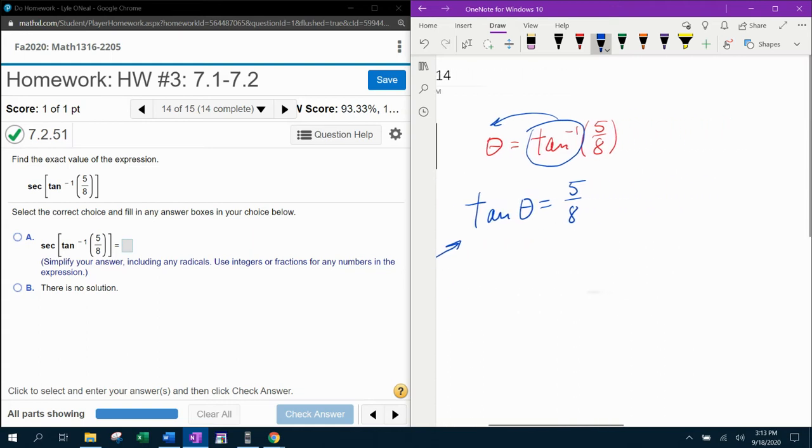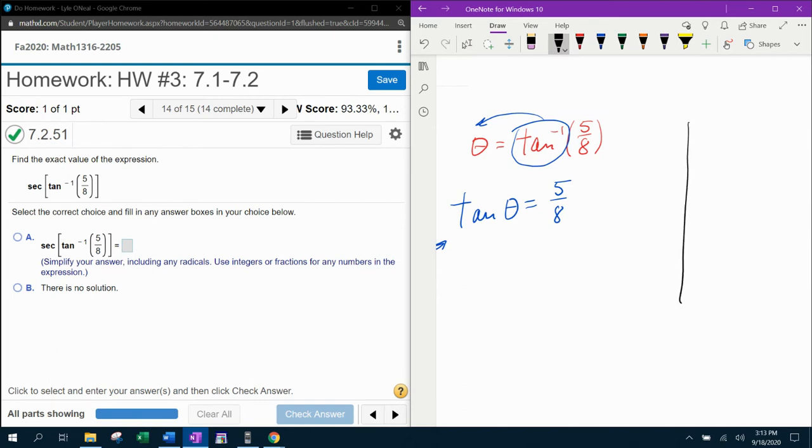So if you will recall, the inverse tangent is restricted to values from negative pi over 2 to pi over 2. So we're restricted to either the first or the fourth quadrant. And we know that tangent is y over x. So when we divide the coordinates of the ordered pair, we need a positive 5 eighths. And so that means that the fourth quadrant is not possible, because in the fourth quadrant tangent is negative.